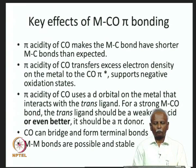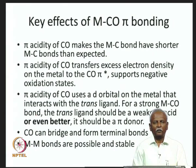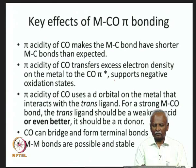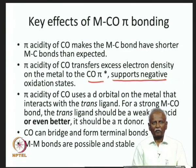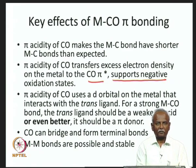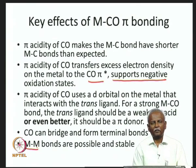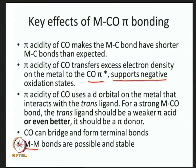The key factor stabilizing the metal-carbonyl bond is the pi acidity of carbon monoxide. The accepting ability of carbon monoxide via its pi-star orbital leads to stabilization of negative oxidation states. Metals in negative oxidation states can be supported because electron density can be pumped into the antibonding orbitals of CO. This results in a very strong metal-CO bond. Carbon monoxide can also form bridges between two metal atoms, and metals can form metal-metal bonds, as seen in Mn2(CO)10 and Co2(CO)8.